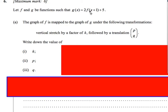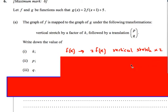Let's look at one more question like this. We're given that g(x) = 2f(x + 1) + 5, and we're asked to say what has happened to the function f(x). We're told it had a vertical stretch by a factor of k, followed by a translation. First things first: f(x) going to 2f(x) is a vertical stretch by a factor of 2. That tells me that k must equal 2.